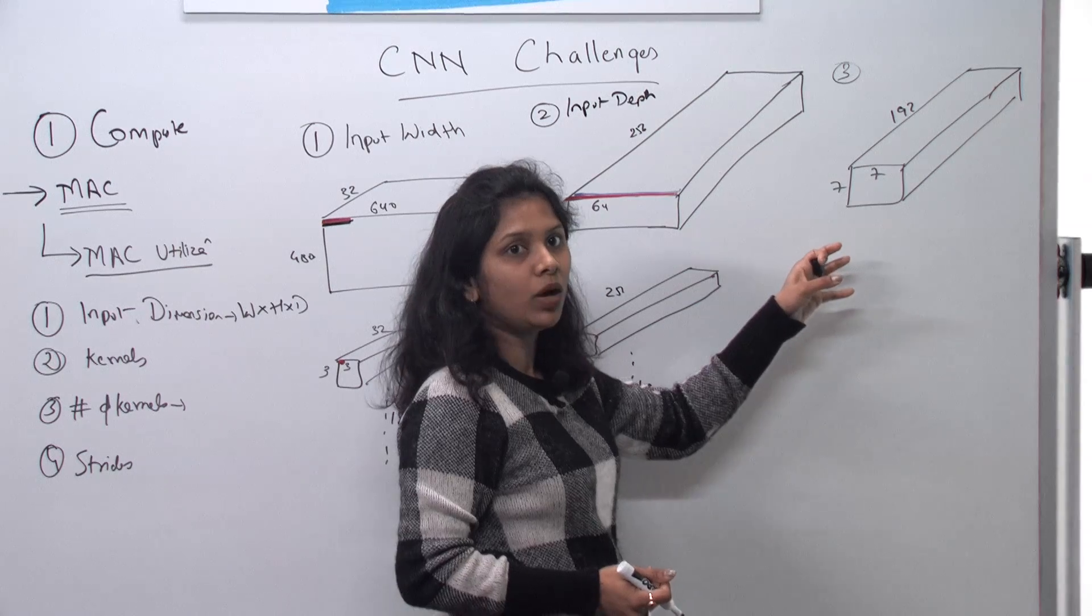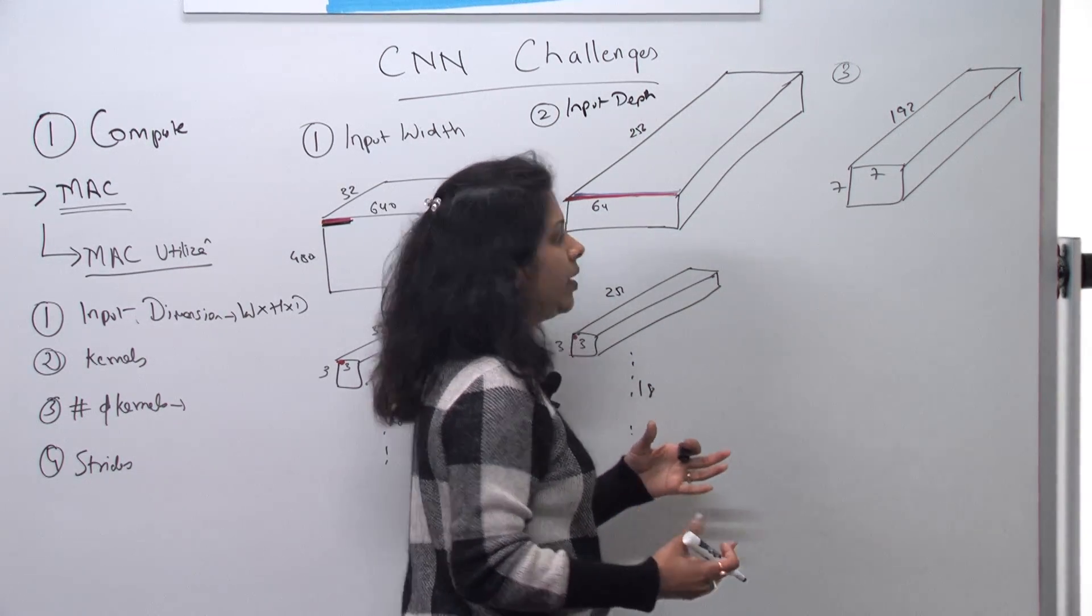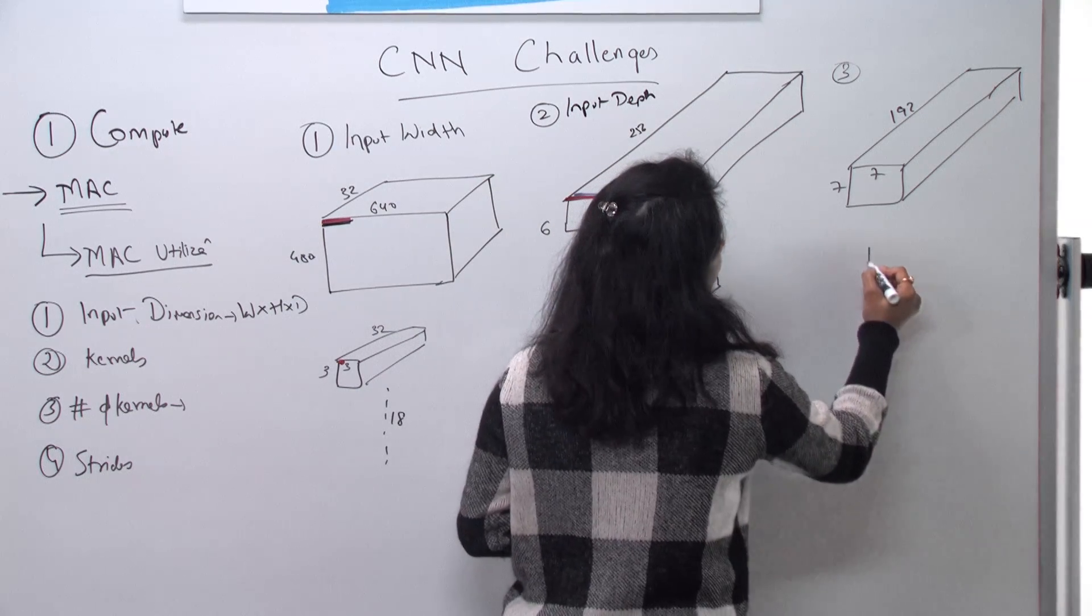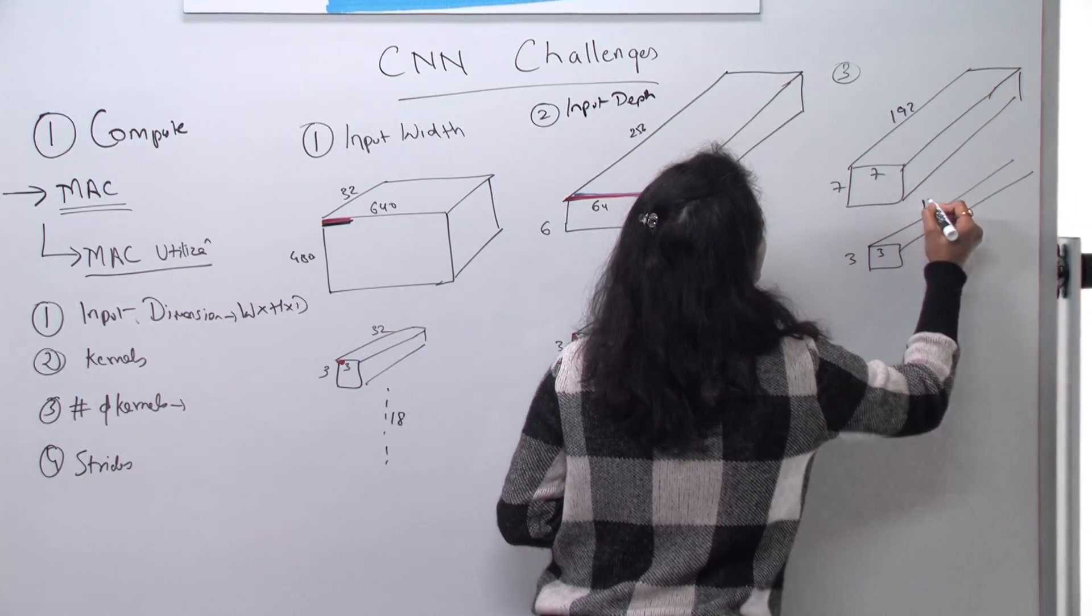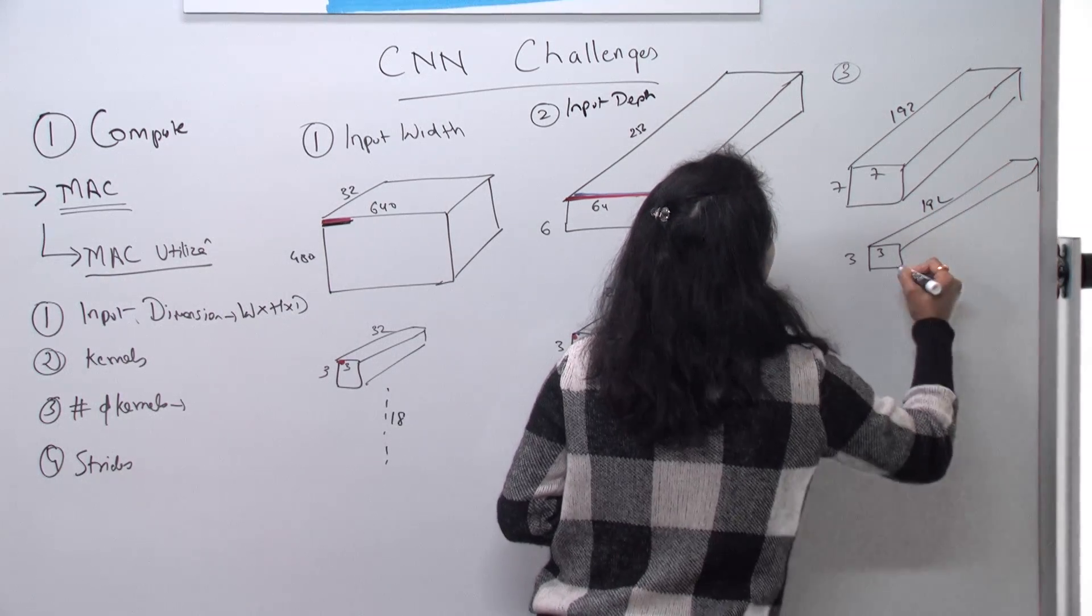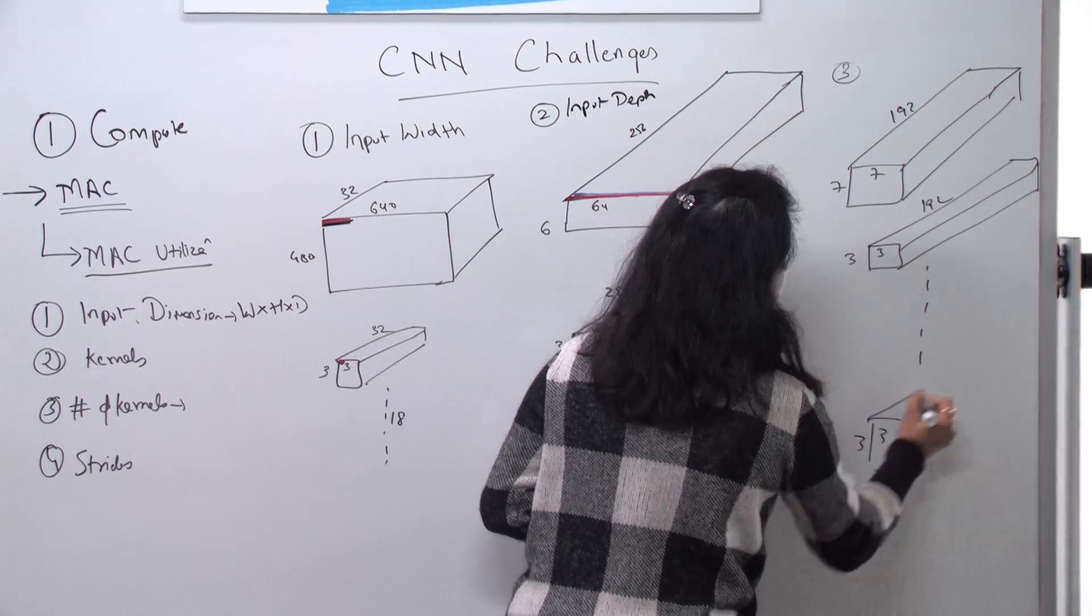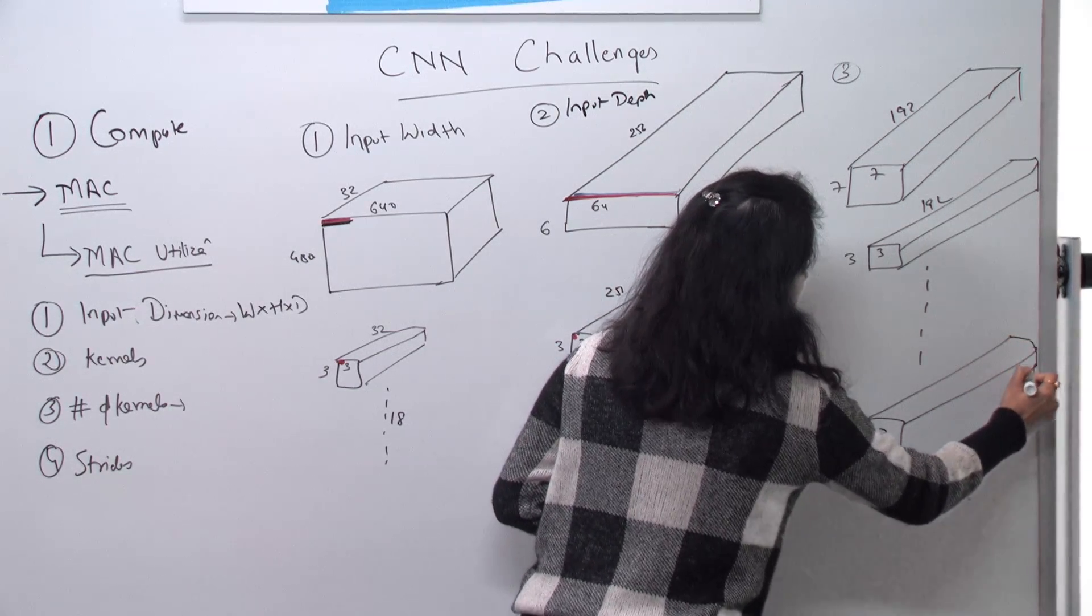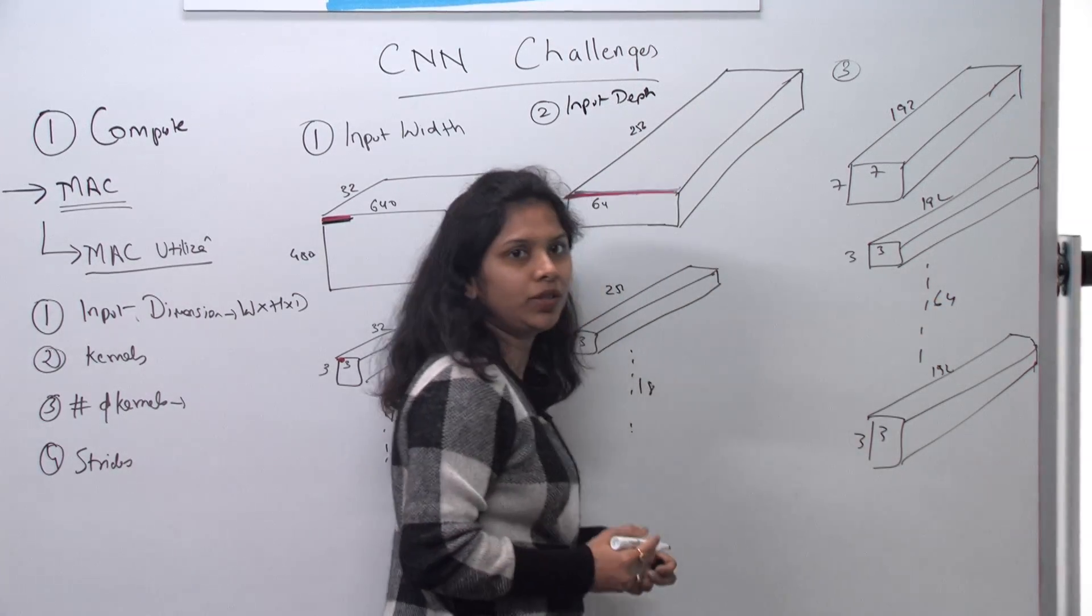But in this case, we might have this 3 by 3, which is going into 192 depth. And I have several of those, 192. But this time, I have 64 of these. So what I can do is what we can call as output depth vectorization. So now we are going to do multiple outputs.